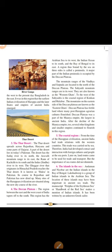Next comes the Thar Desert. The Thar Desert spreads across Rajasthan, Haryana, and some parts of Gujarat. The desert has the Sutlej River to its north and the Aravalli Mountain Range to its east.